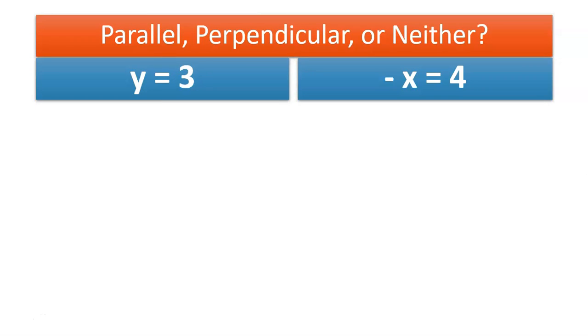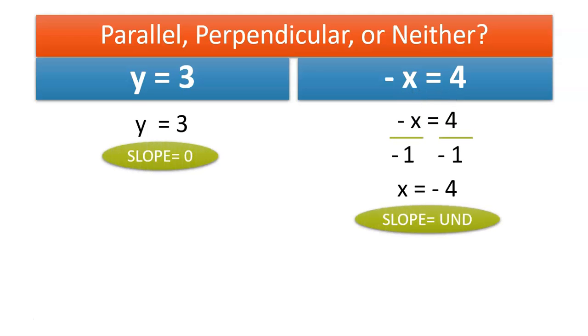Okay, here we have equations with only one variable in them. Let's put them in the right format. You will notice on the negative x, we have a negative 1 we have to divide by. And in our y equations, our slope is 0.